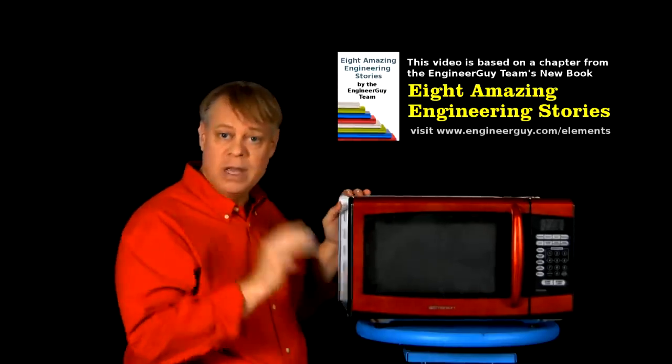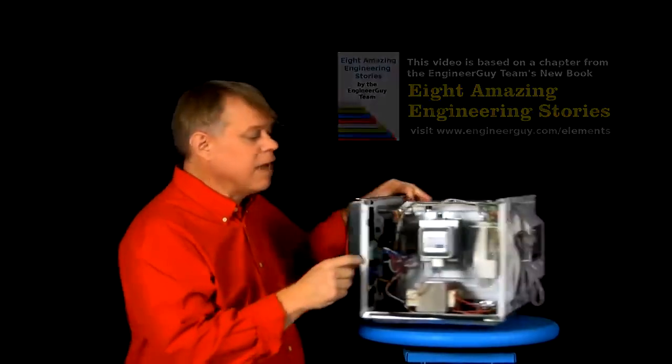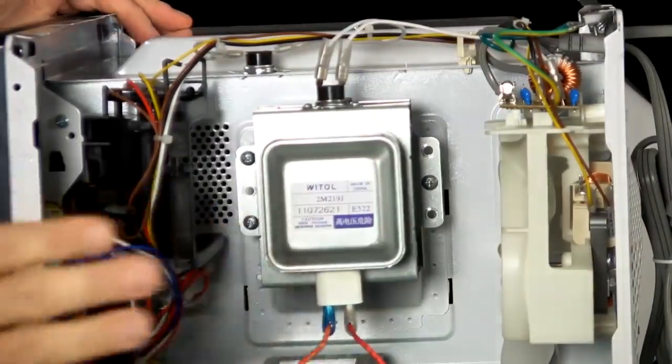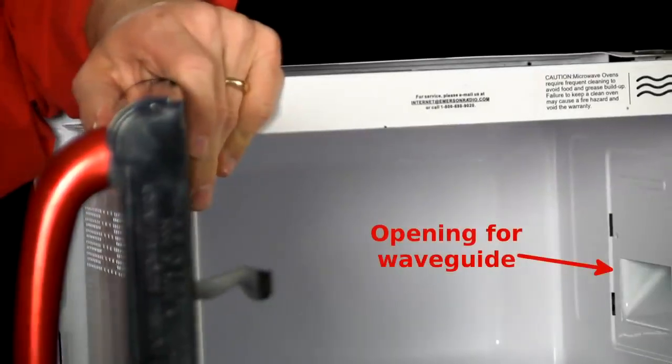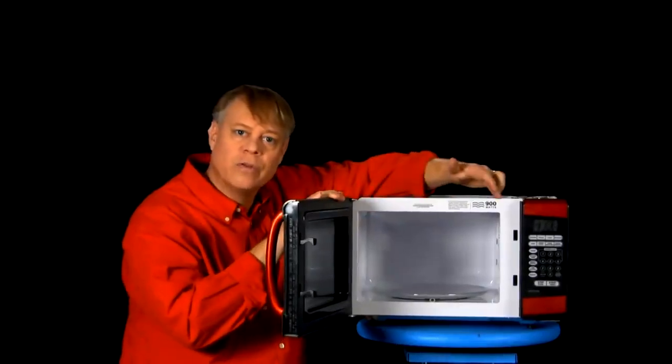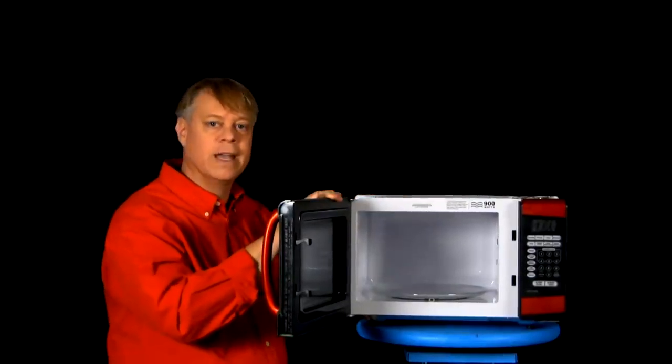A microwave contains three main components. A vacuum tube called a magnetron, it generates the energy that heats food, a waveguide hidden in the wall to direct that energy to the food, and a chamber to hold the food and safely contain the microwave radiation.